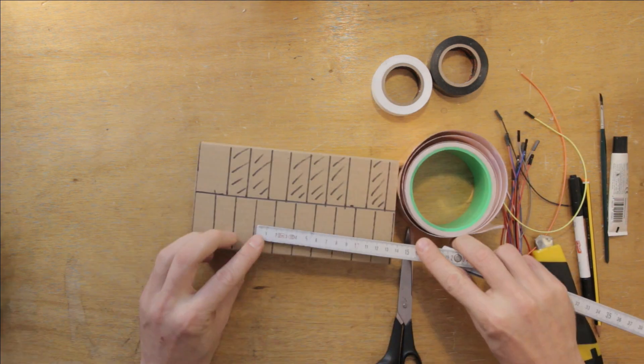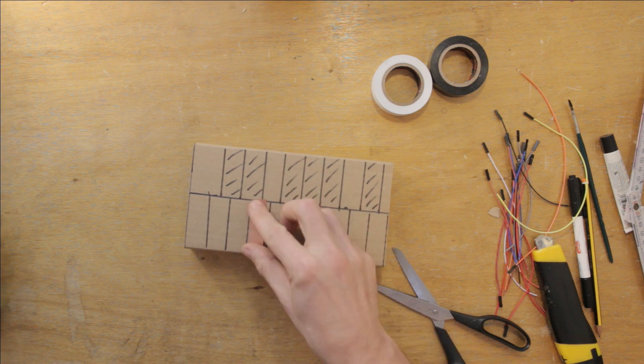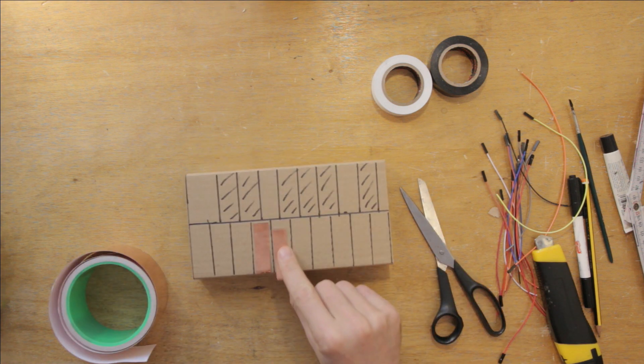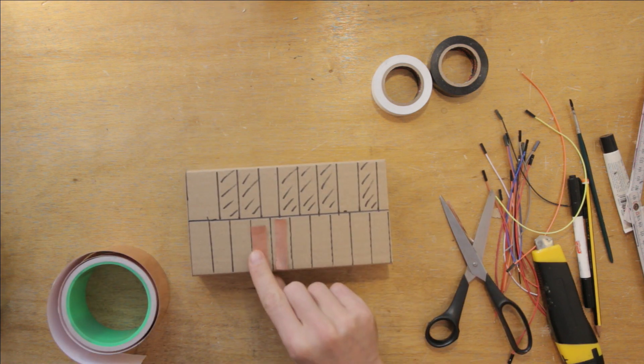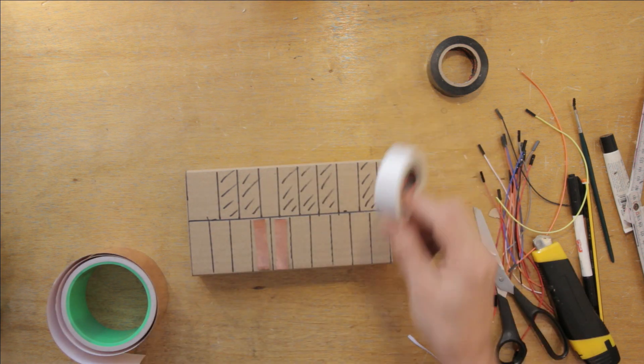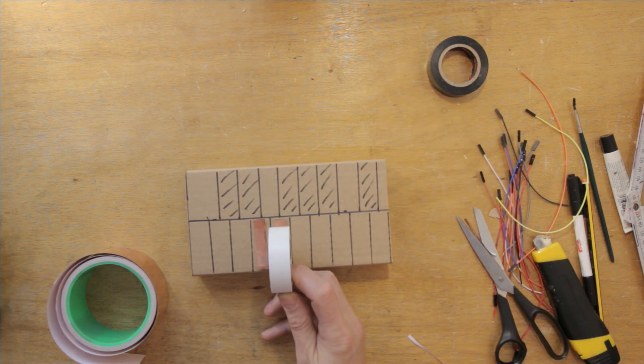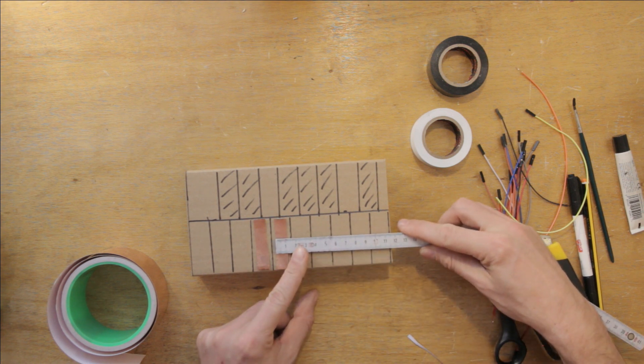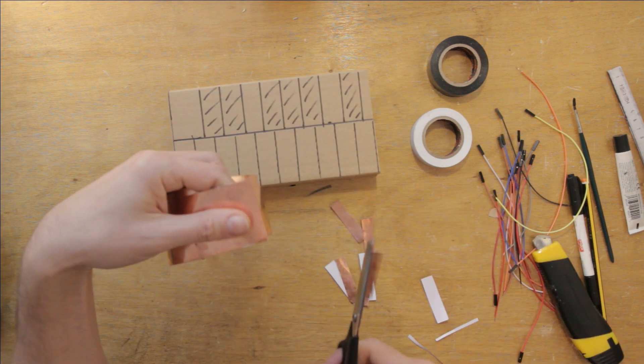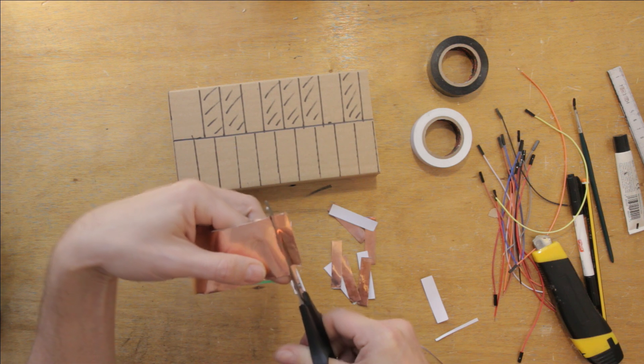I'll start with the white keys, so that means the copper tape. First I'll need to cut out some pieces of a suitable size. Something like that. No, maybe a little bit narrower. I don't want the pieces to be right up against each other because then it's too easy to accidentally press 2 instead of 1. Around 12mm wide then. Let's make 10 of those.